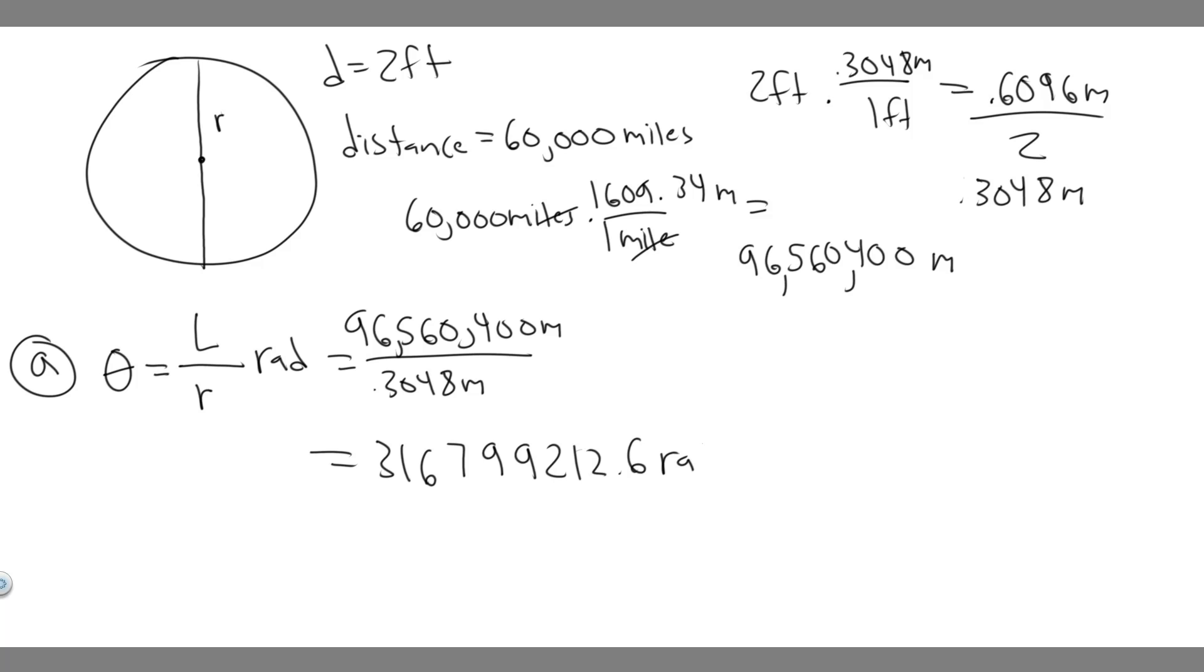And so keep in mind, this is going to be radians. So you can round this if you want. It's going to be 3.2 times 10 to the 8 radians. So 3.2 times 10 to the 8 radians, that's going to be your answer to A.